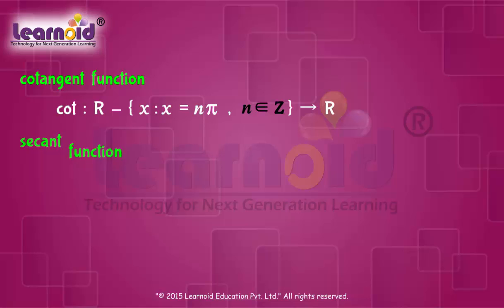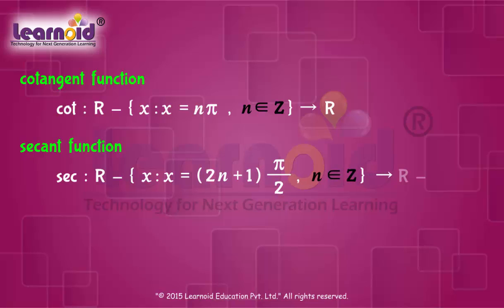Secant function for all real values of x, except x is equal to (2n+1) pi by 2, to values of R except minus 1 to 1.